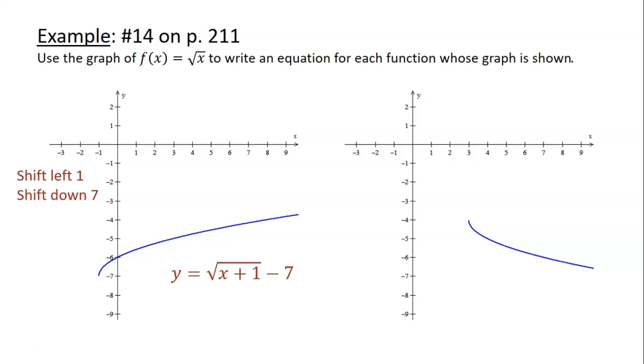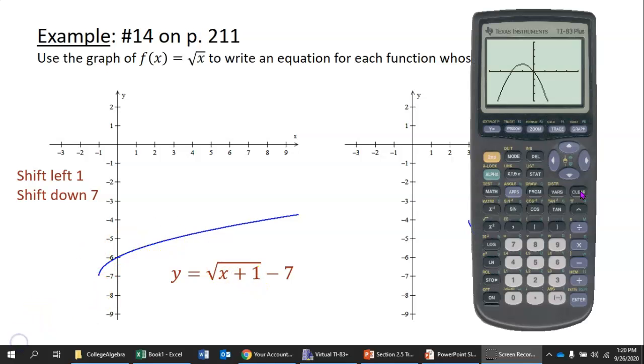Just for fun, let's check that on the graphing calculator. I'm going to clear this out. I'm going to reset my window, so I'm going to zoom standard. So now it's back to being -10 to 10. And now I'm going to clear this out. And here what we're looking at is y equals the square root of (x + 1) minus 7. So graph that, graphing calculator. Yeah, that's pretty much what we were looking at here.